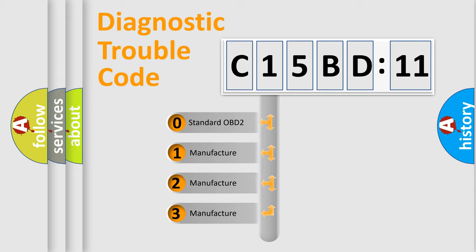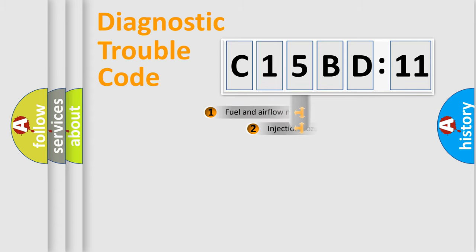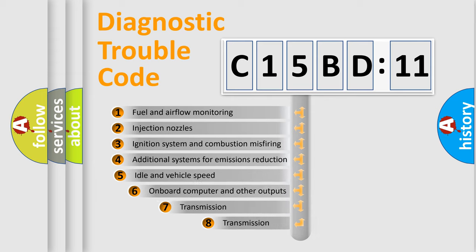If the second character is expressed as zero, it is a standardized error. In the case of numbers 1, 2, or 3, it is a manufacturer-specific error.